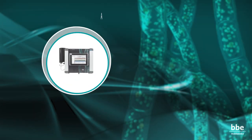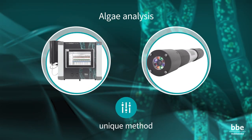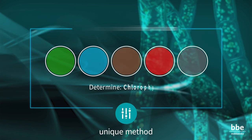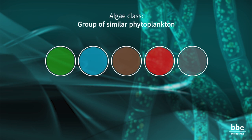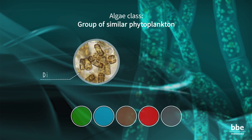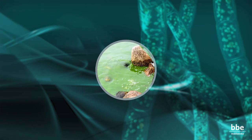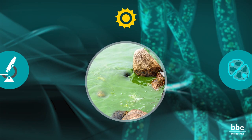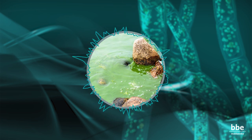The BBE devices for algae analysis use a unique method of spectral algae class differentiation to determine the content of chlorophyll A as a proxy for the biomass. Algae class means a group of similar phytoplankton, like diatoms or cyanobacteria. Like plants, phytoplankton — microscopic organisms living in the water — perform photosynthesis using pigments to turn sunlight into chemical energy.